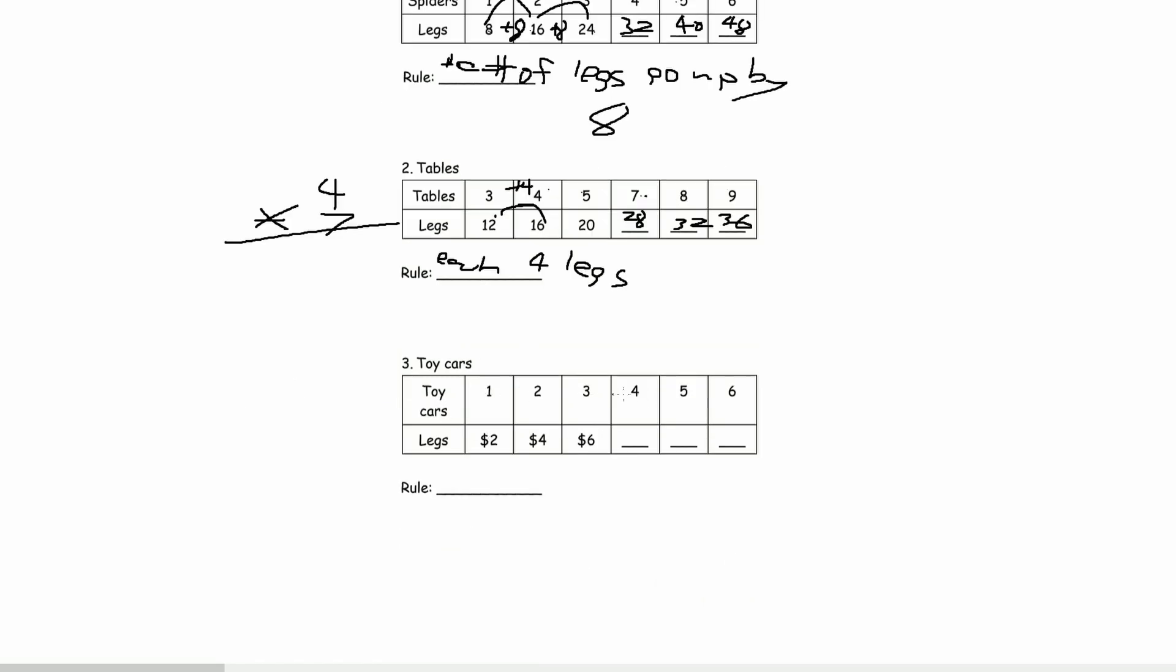Toy cards, 1, 2, 3, 4, 5, 6. And once again, you could do this by multiplication or you could find a pattern and add. So since we know that one toy is $2.